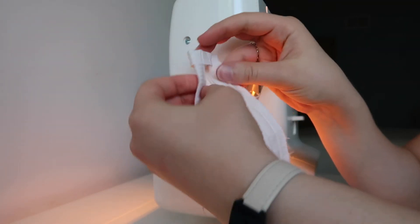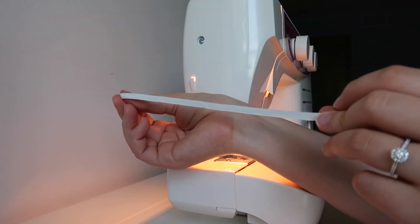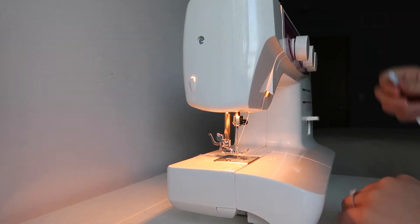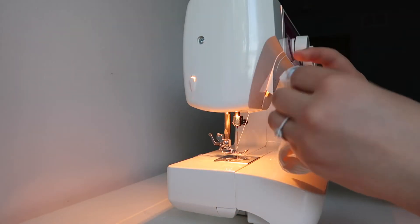Then turn your scrunchie right side out with your hands, a tube turner, or a safety pin and grab your elastic. This is quarter inch elastic that I cut to be 8 inches long and I'm using a safety pin to help me feed it through the scrunchie tube.